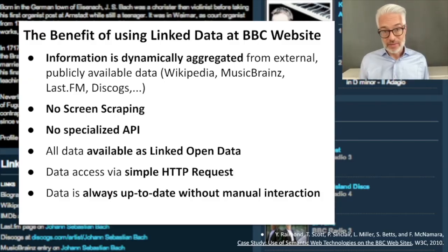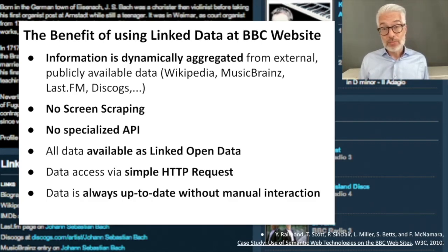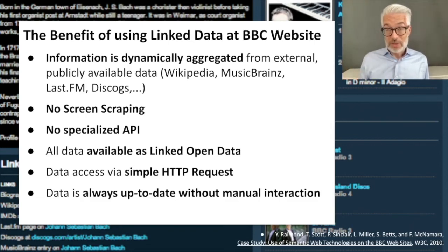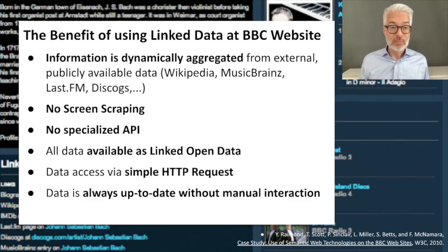Looking at the BBC website and seeing the benefit of linked data over the traditional way: the information is now dynamically aggregated from externally available sources like Wikipedia, MusicBrainz, Last.fm, or Discogs. This data is not simply taken from those websites via screen scraping — if the structure of a website changes, your screen scraping mechanism won't work anymore. You also don't need a specialized API to access one of those services; you simply use the linked data API, which works for all of them. This is a generic API that gives back generic RDF interpreted by your application.